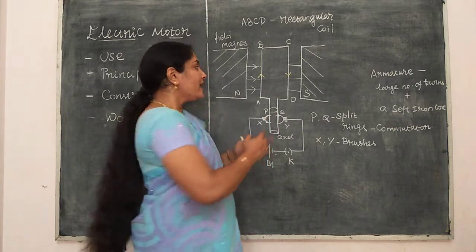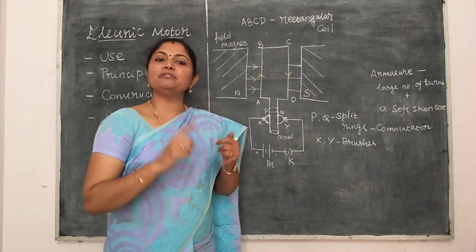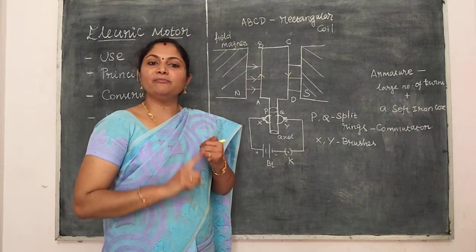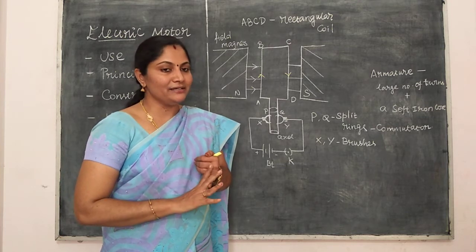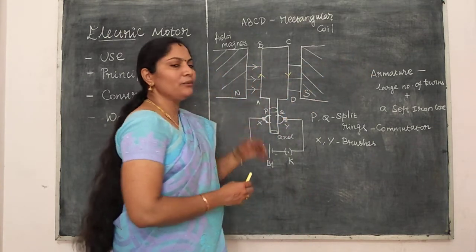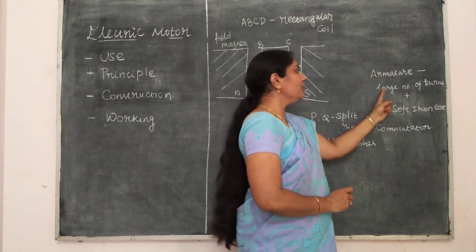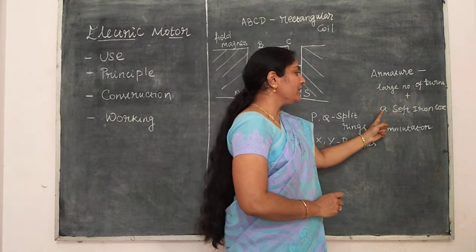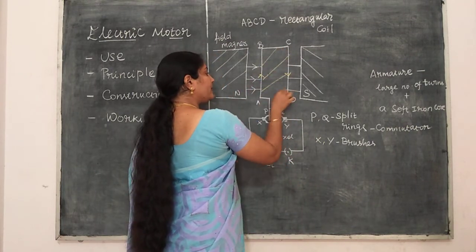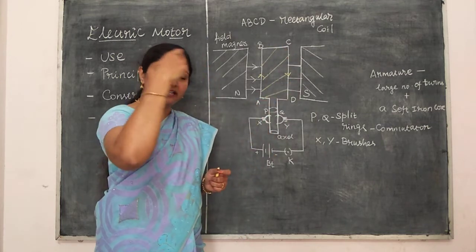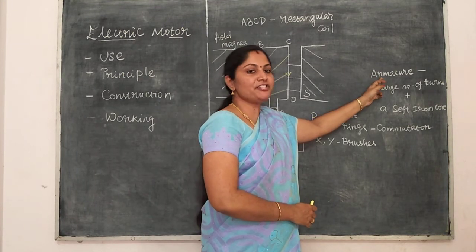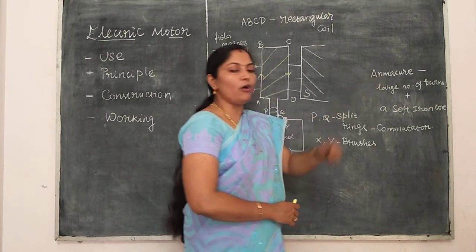In high power motors, instead of permanent magnets, we should use electromagnets. Electromagnets provide a high magnetic field from which we can produce high mechanical energy. Second, we should use an armature instead of a rectangular coil. Armature consists of a large number of turns wound over a soft iron core, which enhances the mechanical energy produced in the electric motor.